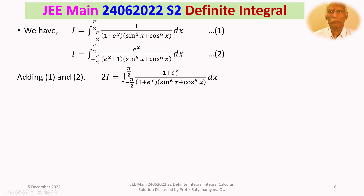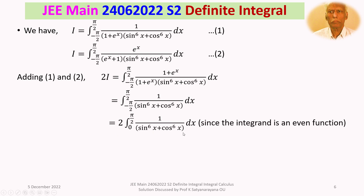The (1 + eˣ) terms cancel, giving 2I equals the integral from −π/2 to +π/2 of 1/(sin⁶x + cos⁶x) dx. The integrand 1/(sin⁶x + cos⁶x) is an even function — replacing x by −x leaves it unchanged. Therefore the integral from −π/2 to +π/2 becomes 2 times the integral from 0 to π/2. So 2I = 2 · ∫₀^(π/2) 1/(sin⁶x + cos⁶x) dx, and dividing both sides by 2, I = ∫₀^(π/2) 1/(sin⁶x + cos⁶x) dx.